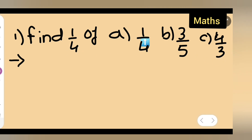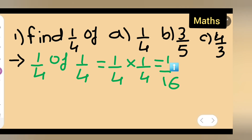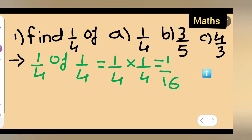Let us solve the first one, that is a) one upon four of one upon four. How are you going to deal with this? You are going to write one upon four multiplied by one upon four and see what answer you get — one upon sixteen. So in place of 'of' you write the multiply sign: one upon four multiplied by one upon four, which equals one upon sixteen.